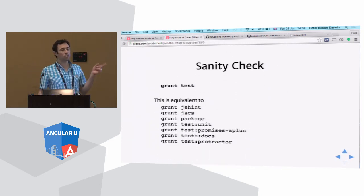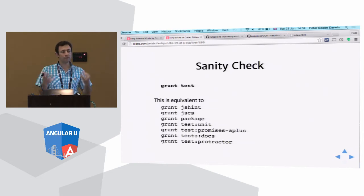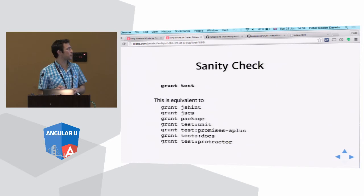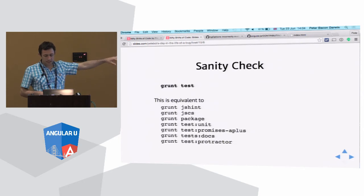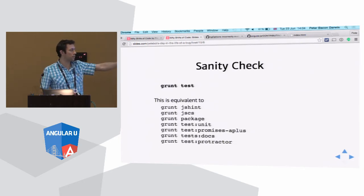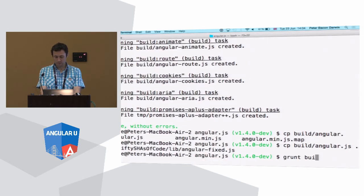We've also got grunt test, which does a whole load of stuff. It checks all your code with JSHint to make sure it's not doing anything Mr. Crockford wouldn't like. It uses JSCS which checks that the styling of your code is good — braces in the right place, spaces after curly braces, and so on. Package we've already seen; test-unit is basically a one-off run of what we were doing with grunt auto-test. And the most important one, which takes forever, is called test-protractor — we run through about 200 end-to-end tests using that. I'm not going to run that, but I can leave it running in the background.